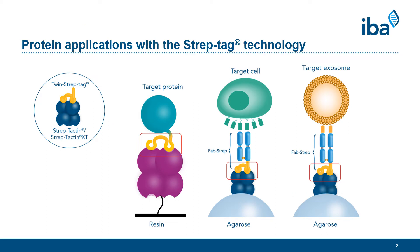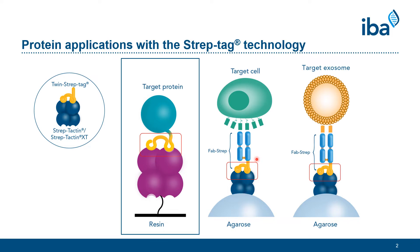The StrapTech technology can be used for various applications. How the general principle behind this works has already been explained in another video, and you can find the link in the video description below. It can generally be used for targeting proteins, cells, or exosomes. When working with proteins or protein purification, the protein of interest needs to be connected to one of our tags. For cells or exosomes, you can choose between different surface marker-specific antibody fragments, which are all connected to our twin StrapTech — these are called FabStraps. Today we want to focus on the different possibilities of the StrapTech technology for protein production and assay applications.